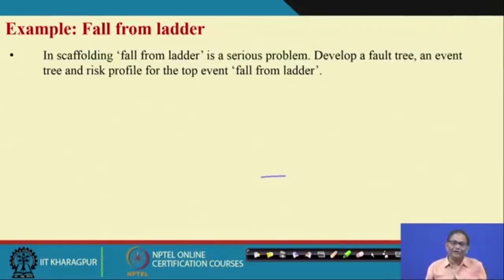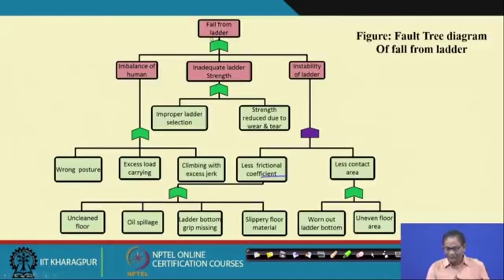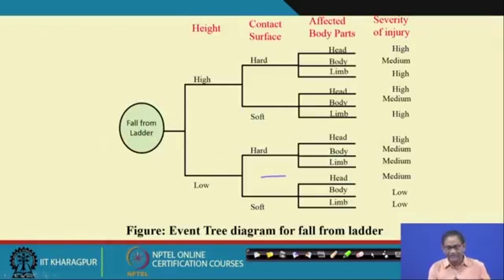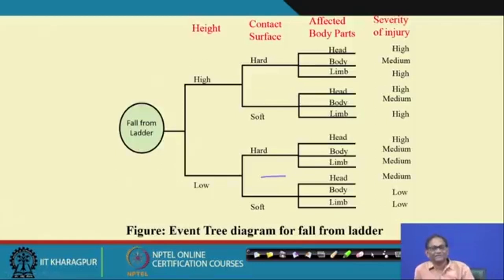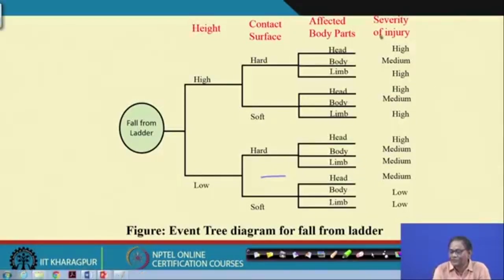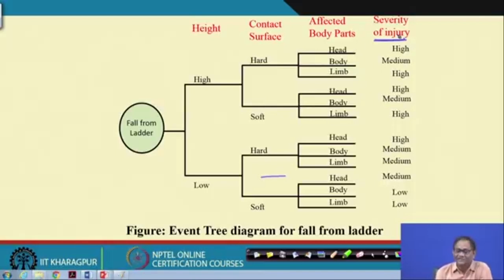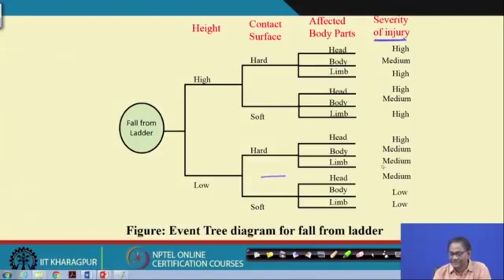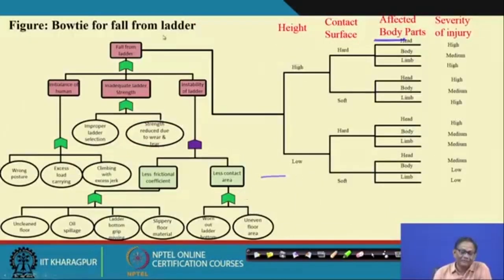Many times we use the fault from ladder example. A fault tree is built for why someone falls from a ladder, and then an event tree captures — depending on from which height the fall occurs, what the contact surface is, and which body part is affected — the resulting severity or consequence in terms of injury severity. This is essentially related to injury severity. So bow tie is not necessarily only for high-technology-oriented situations — it can also be applied to manual or semi-mechanized jobs.